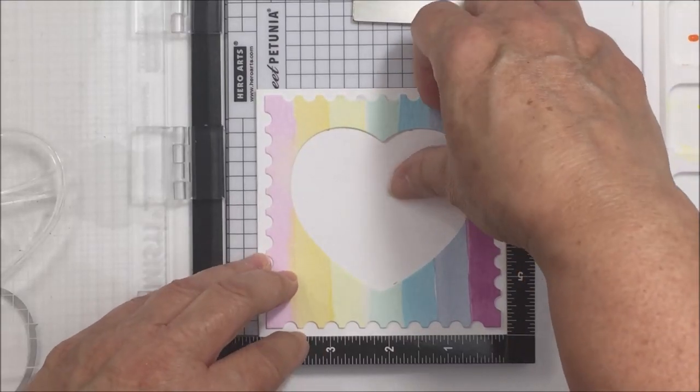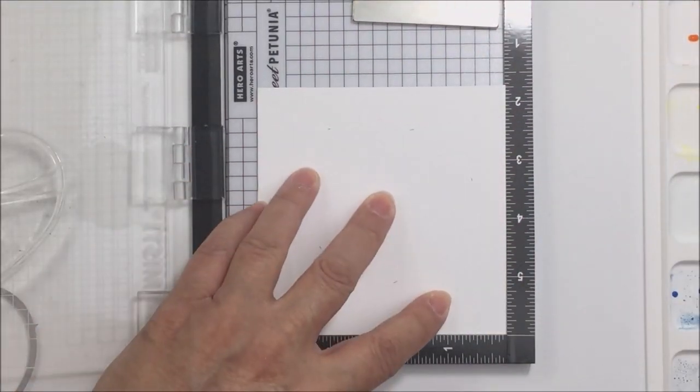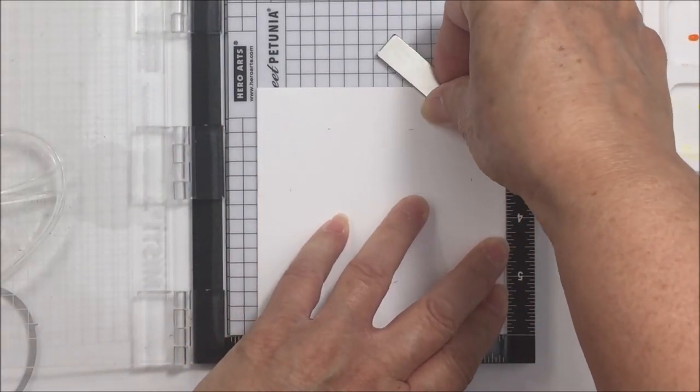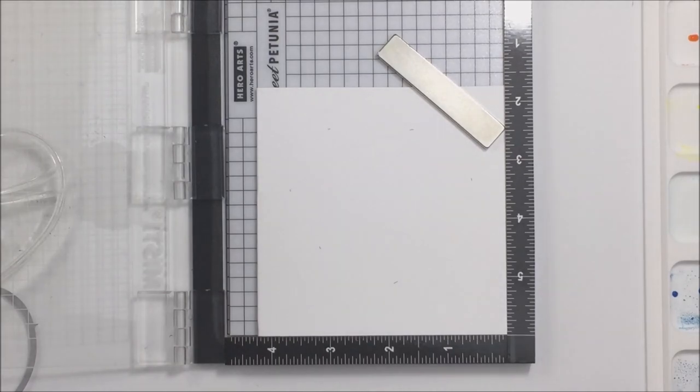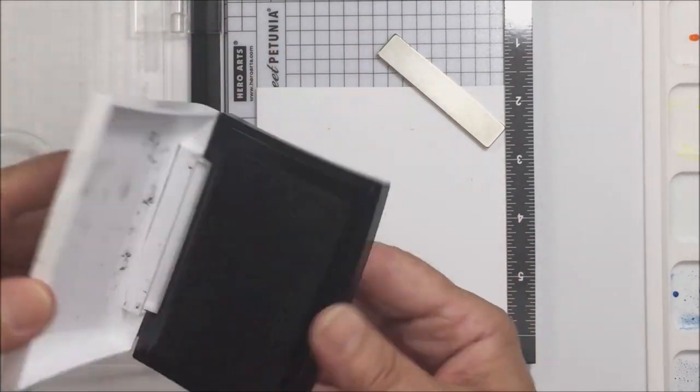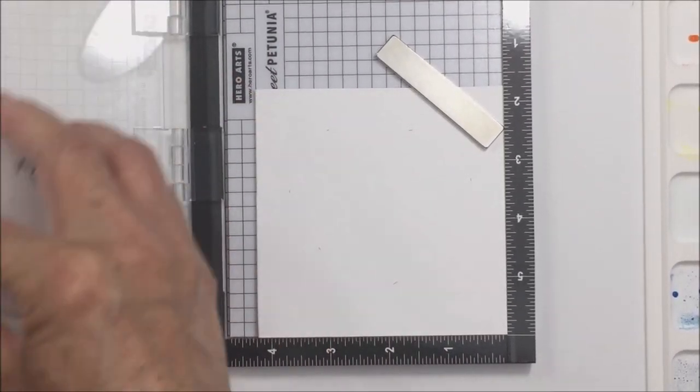In that way I can make sure that I have got my stamp in the right place for behind my shaker element. So the heart is going to be in a shaker element, obviously, and I wanted that Paper Hugs image to be behind, to be behind my sequin mix in my shaker. So now what I want to do is stamp out the image for behind my shaker element.